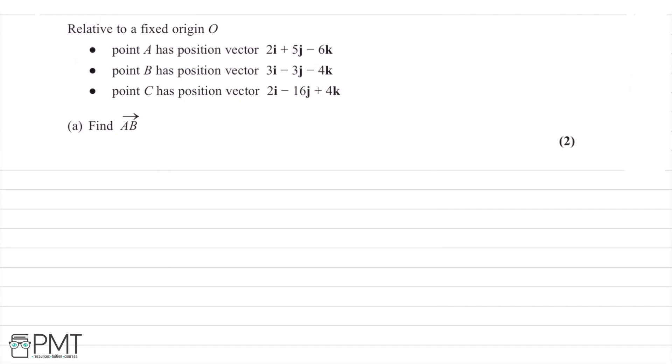In this question, we're told that relative to a fixed origin O, point A has position vector 2i plus 5j minus 6k, point B has position vector 3i minus 3j minus 4k, and point C has position vector 2i minus 16j plus 4k.